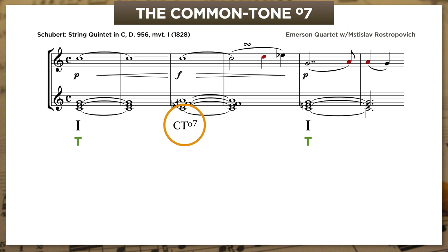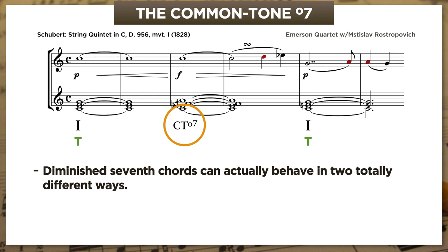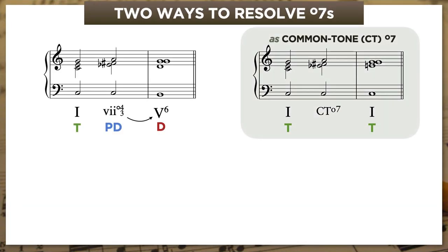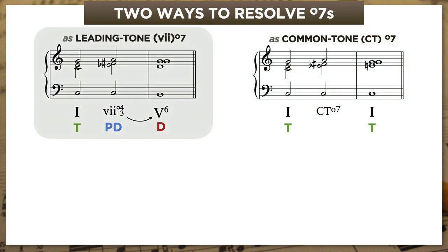This brings us to the main point of the video: diminished seventh chords can actually behave in two totally different ways. We want to make sure we have a really clear understanding of those two behaviors. The leading-tone seventh chord has no notes in common with the chord it resolves to — every voice moves by step. This is always true, though there's one apparent exception I'll talk about later.